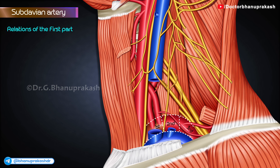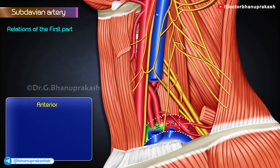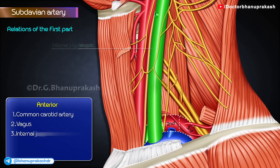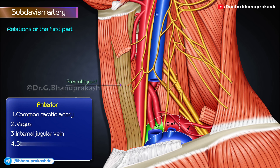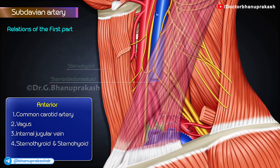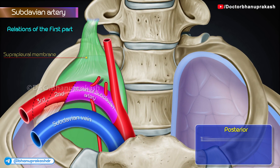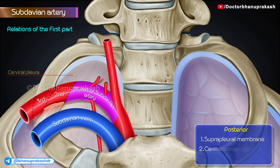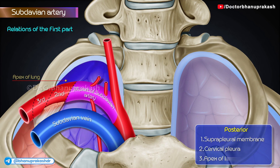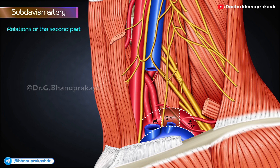Relations of the first part. Anteriorly, the immediate relations from medial to lateral side are: common carotid artery, vagus, internal jugular vein, the sternothyroid and sternohyoid muscles, and sternocleidomastoid. Posterior relations: suprapleural membrane, cervical pleura and the apex of the lung.